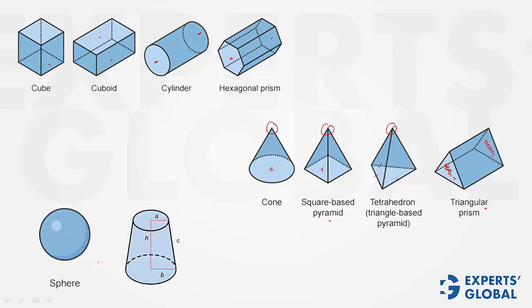Some other solids are neither prisms nor pyramids — they do not lie in any of these categories. There can be various other solids which do not fall into either of the two categories of prism or pyramid.